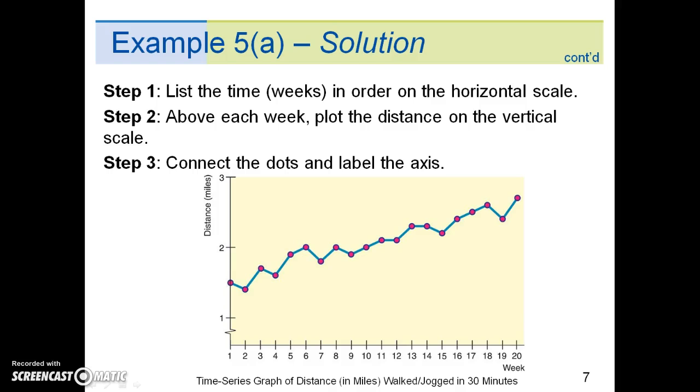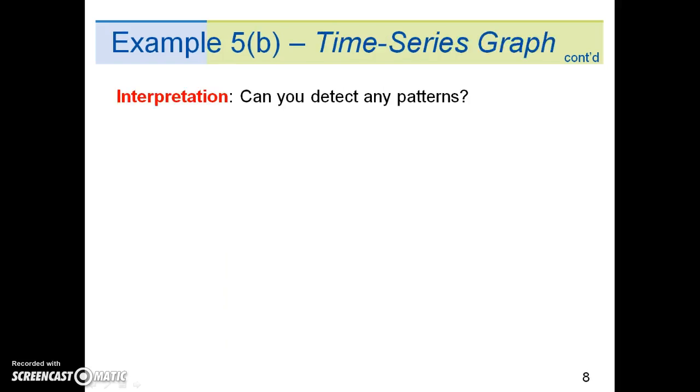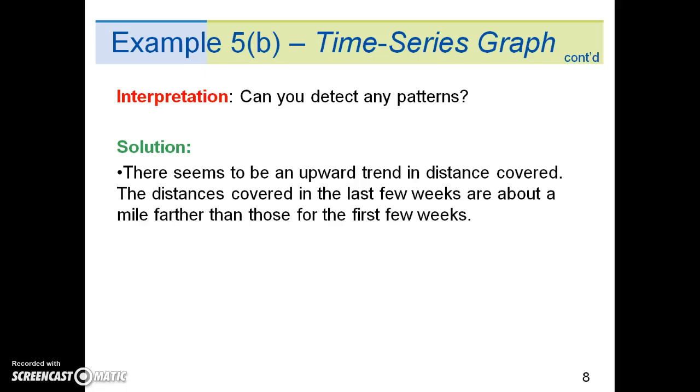The horizontal axis shows the weeks. The vertical axis shows the distance obtained each week. What about interpretation? Can you detect any patterns? There are two important things to note. First, there seems to be an upward trend in distance covered. The distances covered in the last few weeks are about a mile farther than those for the first few weeks.